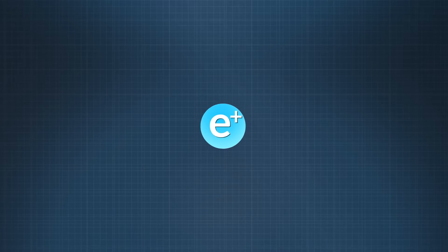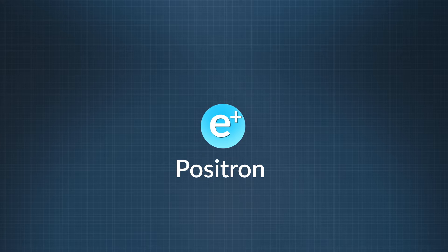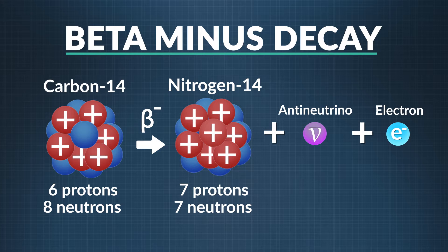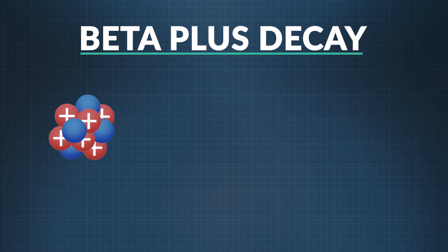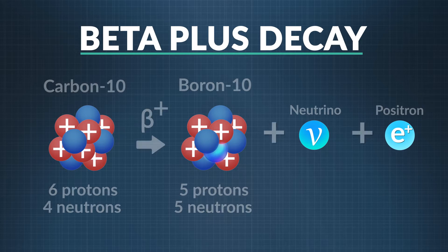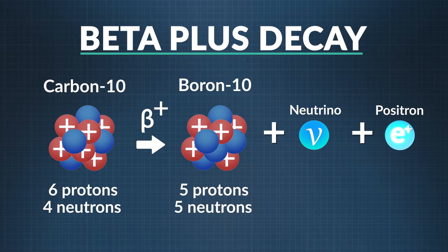There's another particle that can be emitted during beta decay: a positron, which has the same mass as an electron but has a positive charge. With beta minus decay, a neutron decays into a proton, an electron, and an antineutrino. Beta plus decay occurs when a proton decays into a neutron, a positron, and a neutrino. The neutron remains in the nucleus, and the positron and neutrino shoot out.